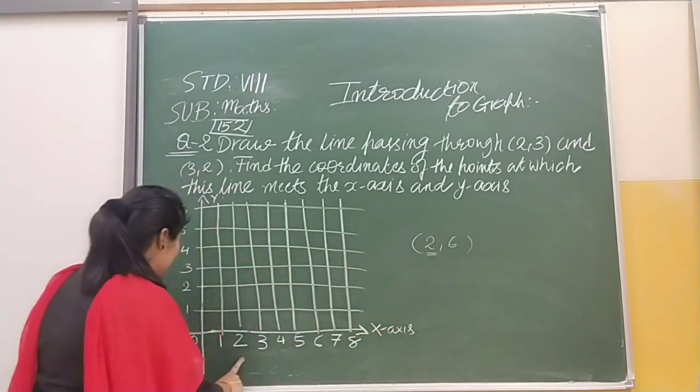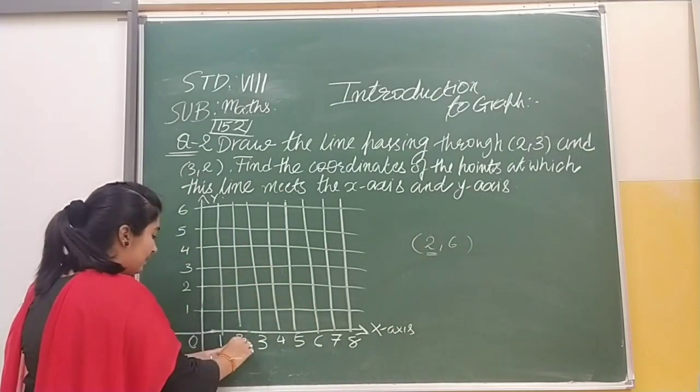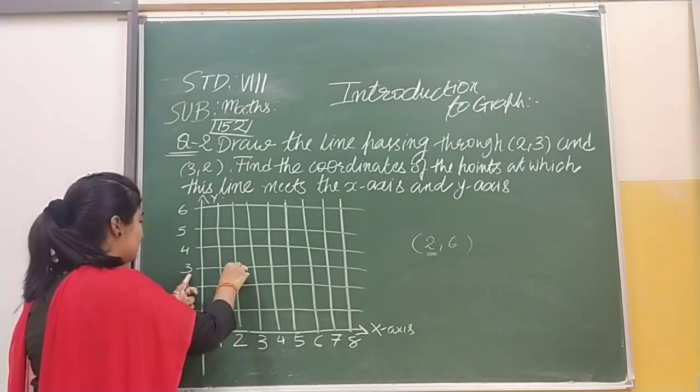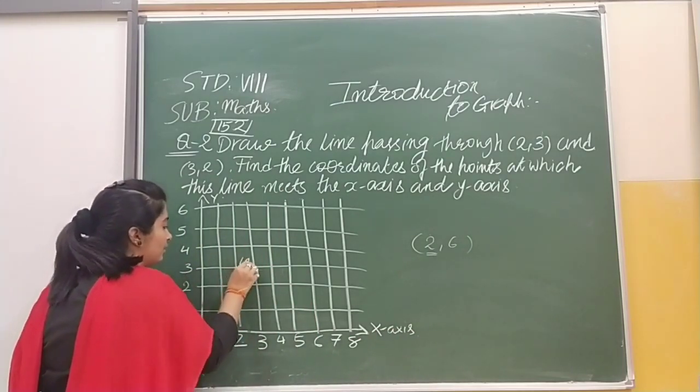Here we have to draw (2,3) and (3,2). So (2,3) is over here. This 2 is on the x-axis and 3 is on y-axis. So our point is (2,3).